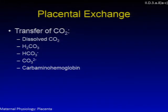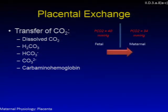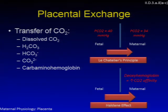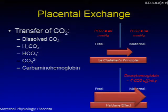Transfer of CO2 occurs through dissolved CO2, carbonic acid, bicarbonate ion, carbonate ion, and carbaminohemoglobin. The PCO2 gradient drives fetal-to-maternal transfer of CO2. Rapid movement of CO2 from fetal capillary to maternal blood invokes a shift in the carbonic anhydrase reaction equilibrium producing more CO2 for diffusion — Le Chatelier's principle. Transfer of CO2 is further augmented by production of deoxyhemoglobin in maternal blood, which has a higher affinity for CO2 — the Haldane effect — accounting for as much as 46% of transplacental CO2 transfer.